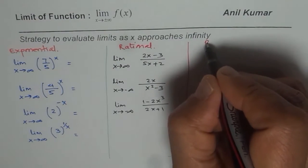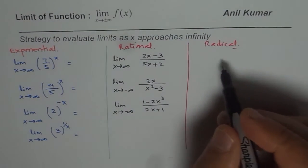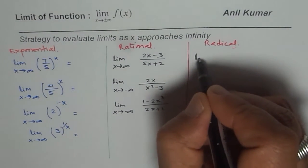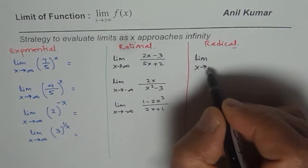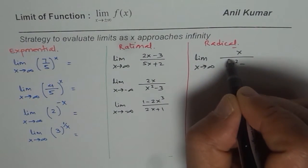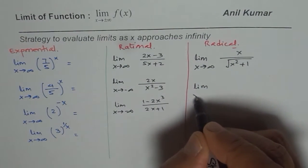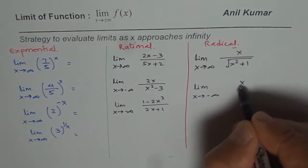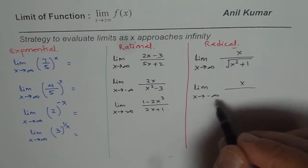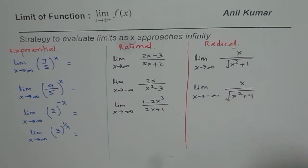Let me take a few radical equations now. These are quite typical. I'll explain a concept which will probably help you answer them correctly. Let's take an example where the limit is x over square root of x squared plus 1, and a similar example approaching negative infinity. So these are the examples we'll consider and then let's see how to answer them.